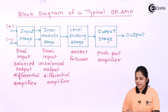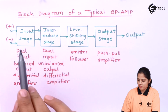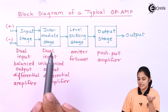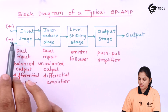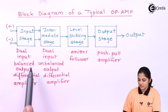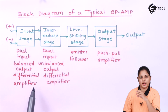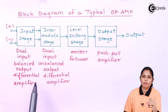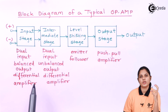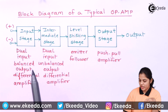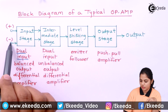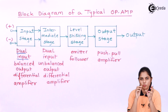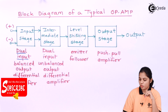This is the block diagram of a typical operational amplifier where we have different stages, and each stage has a different significance. Our first stage is an input stage, which is a dual input balanced output differential amplifier. It amplifies the difference between the signals applied to both inputs — you have an inverting terminal and a non-inverting terminal, giving two outputs, so it is a balanced output differential amplifier.